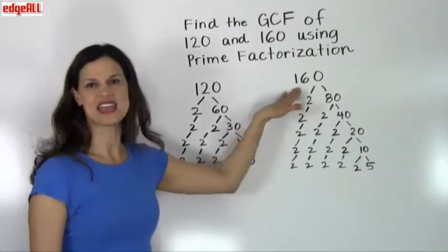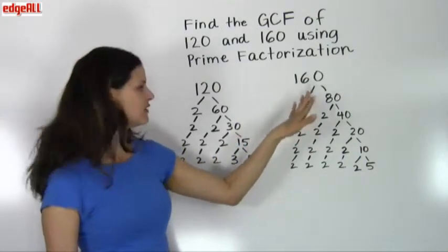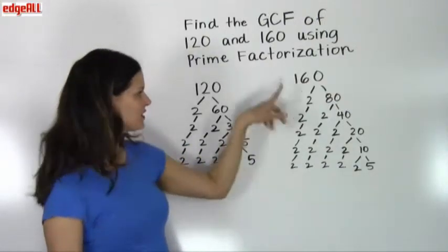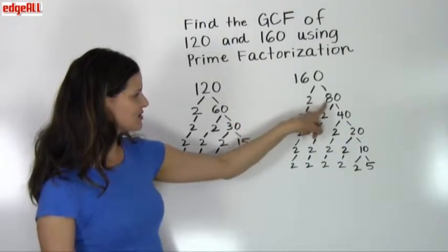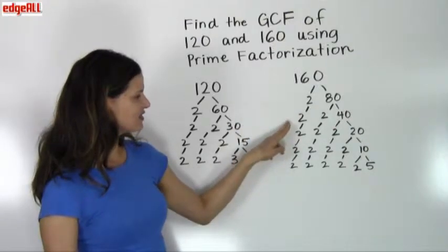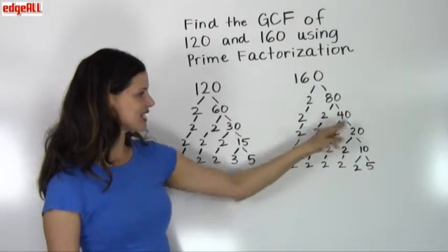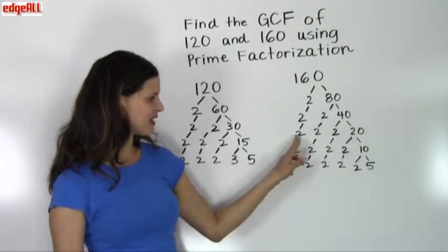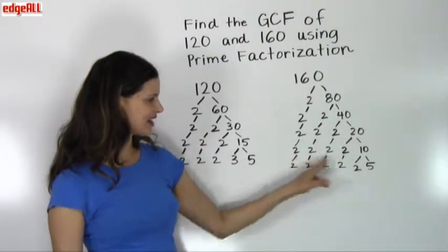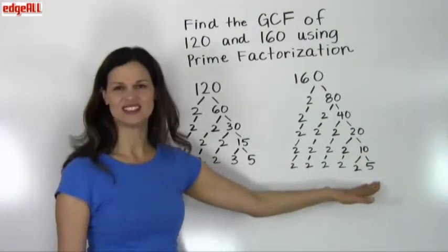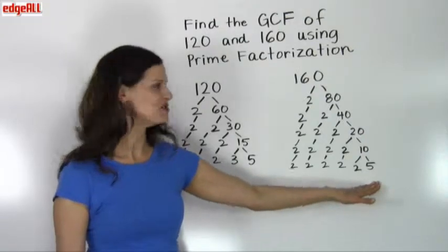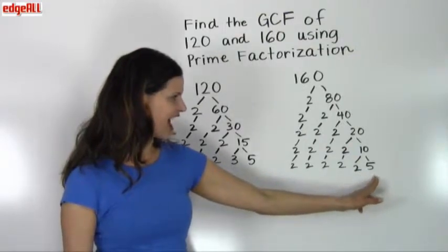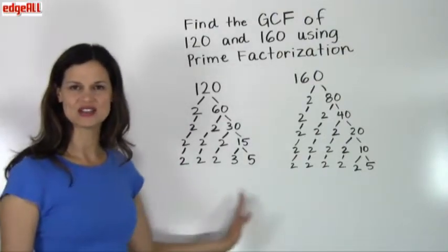Similarly, we do the same thing with the number 160, continuing to divide out prime numbers until we reach the lowest level where all numbers are prime. 160 divided by 2 equals 80, giving 2 times 80. Then 2 times 2 times 40, then 40 divided by 2 gives 2 times 20, then 2 times 10, and our final prime factorization of 160 is 2 times 2 times 2 times 2 times 2 times 5.